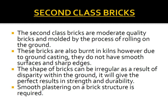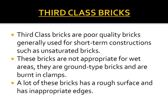Second class bricks are moderate quality bricks, molded by the process of rolling on the ground. These bricks are also burned in kilns; however, due to ground casting they do not have smooth surfaces and sharp edges. The shape of bricks can be irregular as a result of disparity within the ground. They still provide acceptable results in strength and durability, but smooth plastering on a brick structure is required.